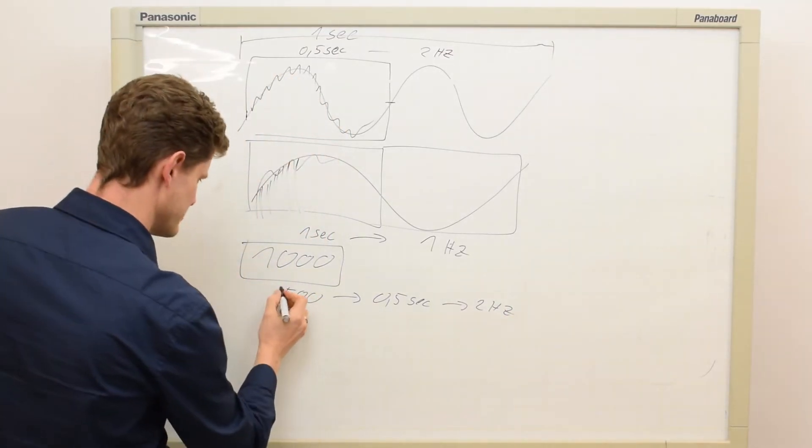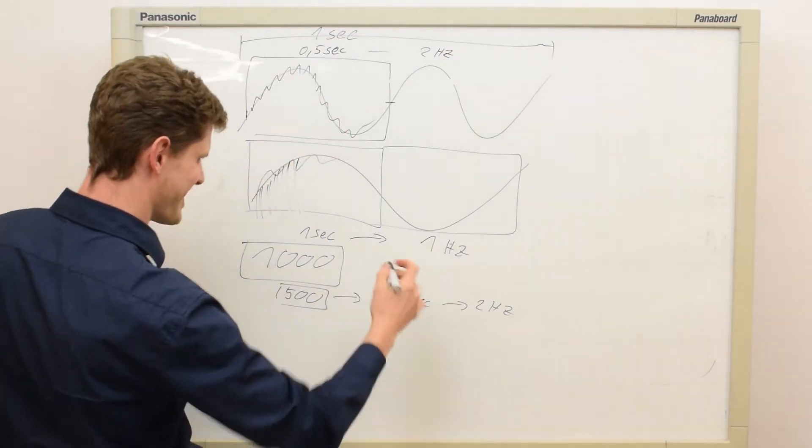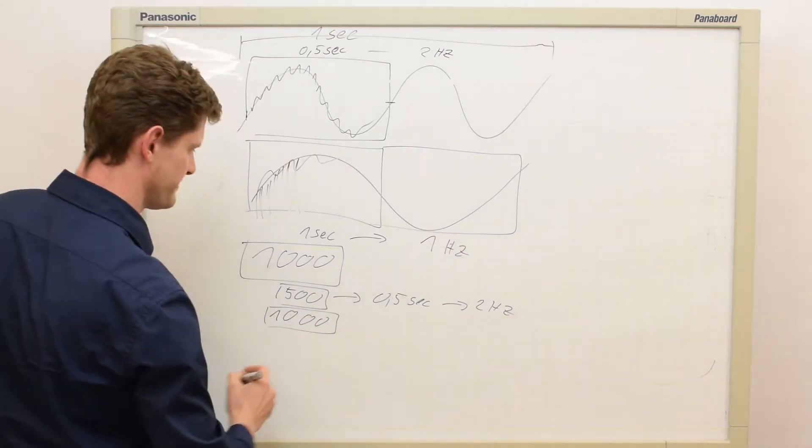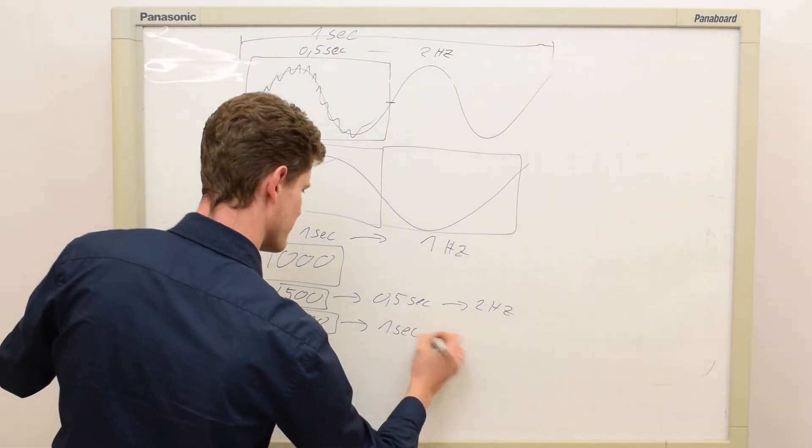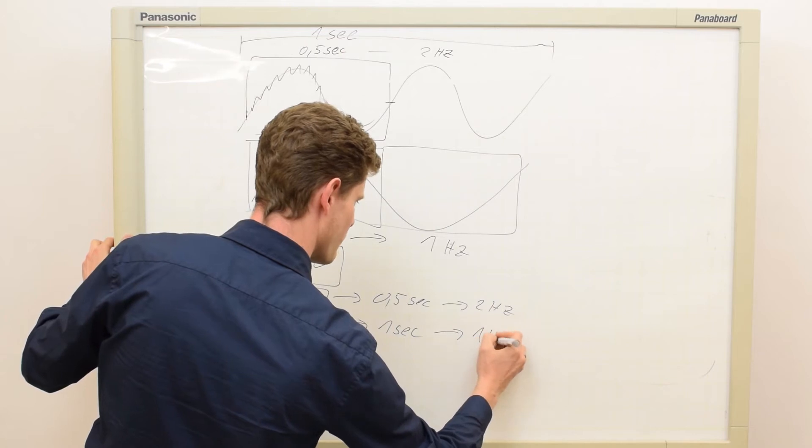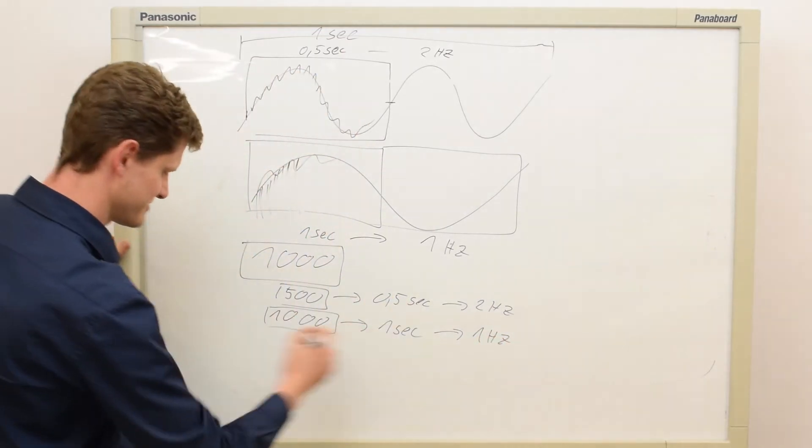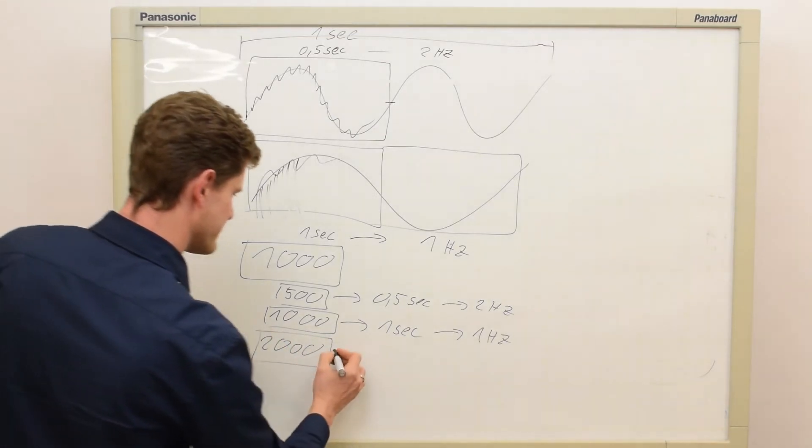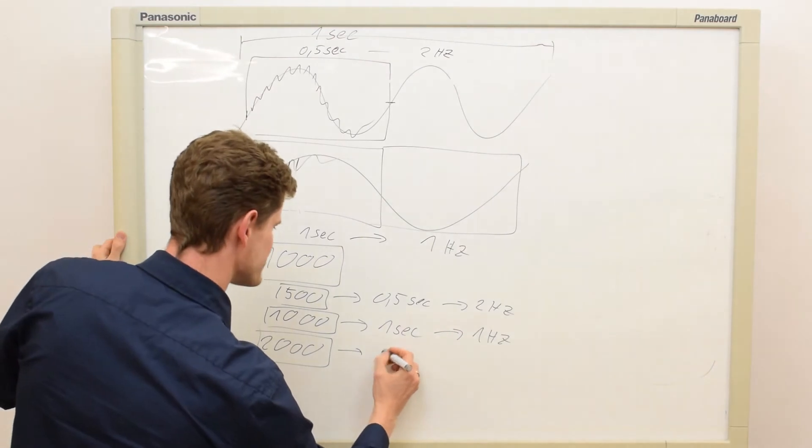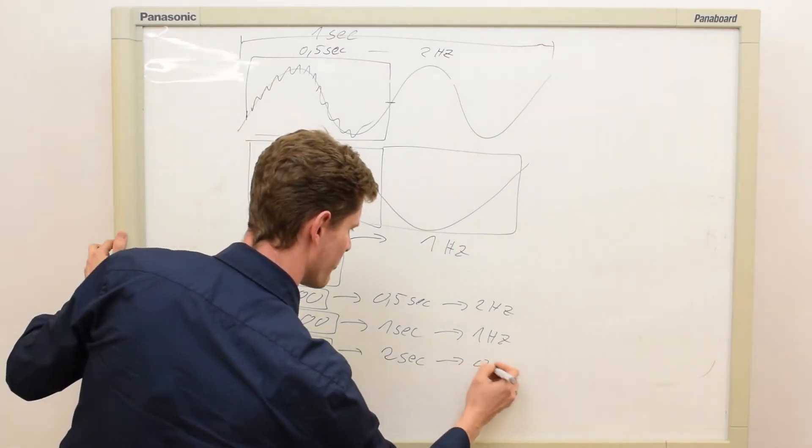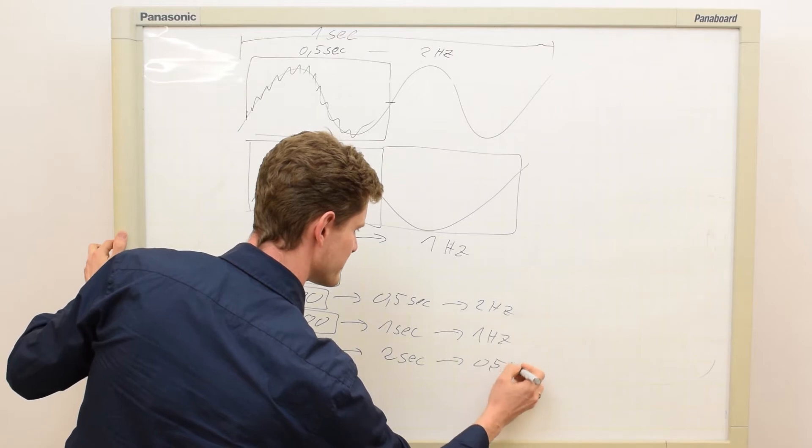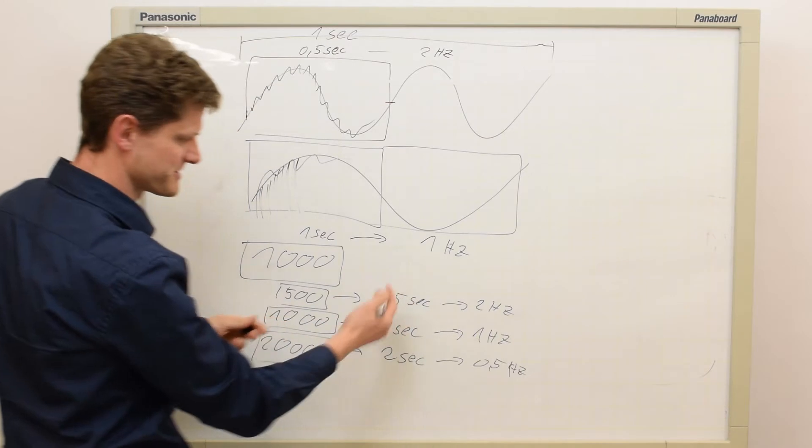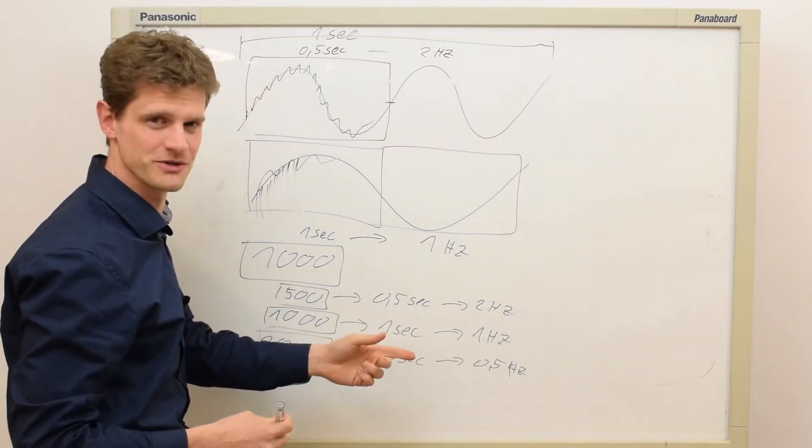Maybe this is not your setting. Then you can say, I need a higher frequency resolution. Then you may select 1,000 samples. That means you have a block length of 1 second and that means you have 1 Hertz frequency resolution. Or, to go to extreme, we take 2,000 samples. That would mean we measure 2 seconds and then you have 0.5 frequency resolution. Just the inverse worth of the time of your block length, then you got your frequency resolution.